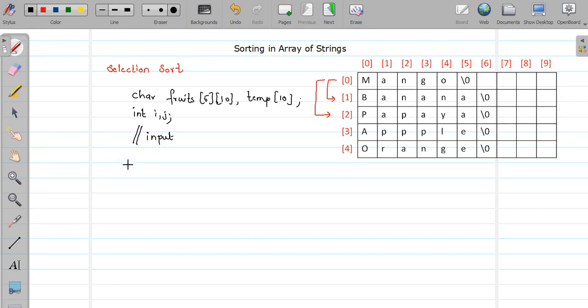For i equals zero, then i less than 4. Now why less than 4? Because what we do generally is we compare the 0th position element with all the elements, then first position element with all the elements, then second position element with 3 and 4, and 3 gets compared with 4. So the 4th element does not compare with anyone. That's why the comparison will be done until the second last position only, so i plus plus.